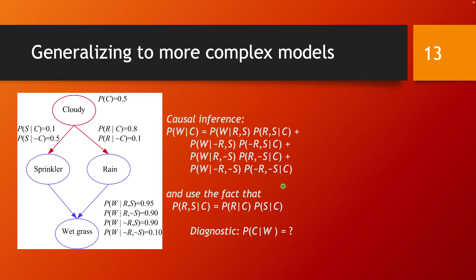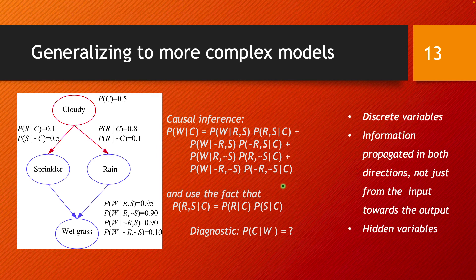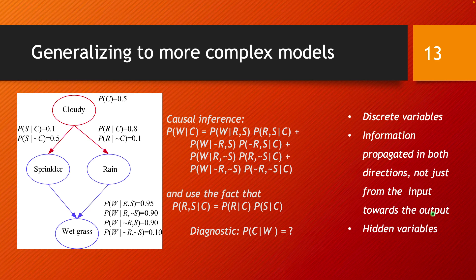We can extend this further to even more complex models. For example, variables need not be binary but can be general discrete variables with multiple options — the only difference is that more cases appear in the conditional probability tables. An advantage of Bayesian networks is that information can be propagated in both directions, not just from input nodes to output nodes. Finally, one can also introduce hidden variables whose values are never directly measurable; their role is simply to connect other variables within the model in a certain way.